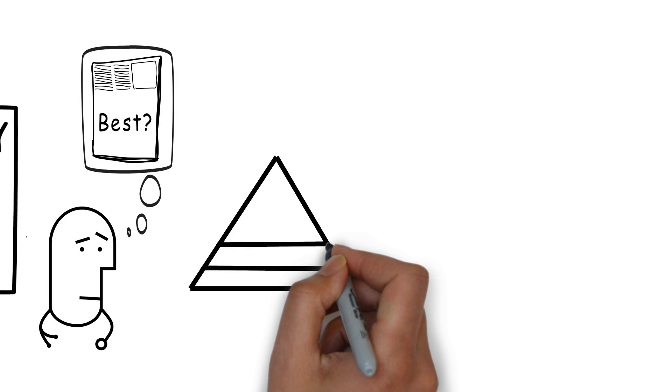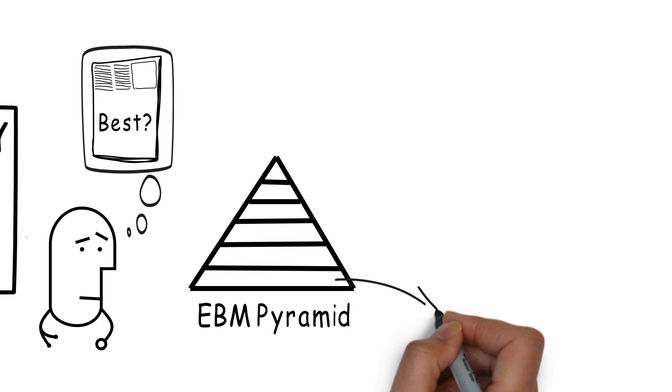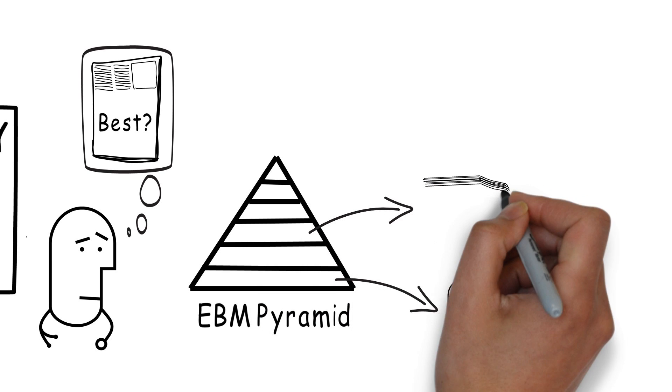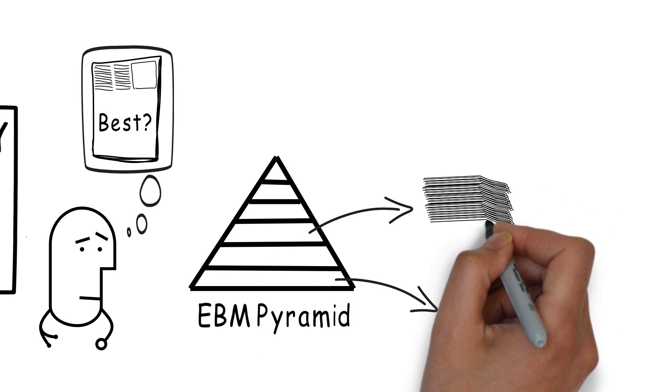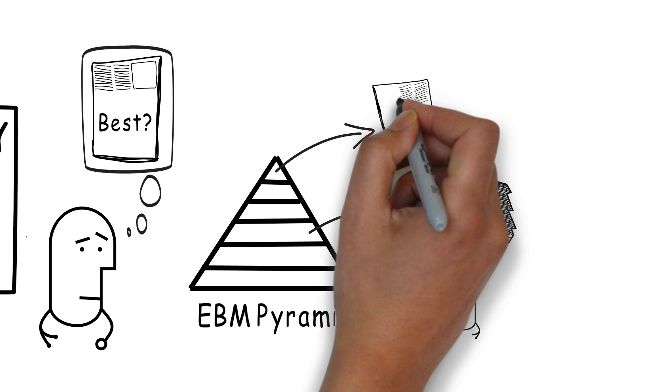You've probably seen an evidence-based medicine pyramid before. These usually have things like expert opinion at the bottom, somewhere in the middle there things like case control trials or randomized control trials, and then as we move to the top usually you get systematic reviews, some by Cochrane, and then evidence-based guidelines.